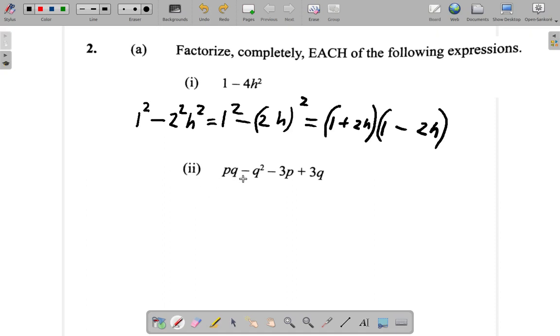We're going to factorize pq minus q squared minus 3p plus 3q. Now we have between pq and q squared here we have a common factor q. So we can put q and in the bracket we can say q into what? It is p. So we're going to put p here.